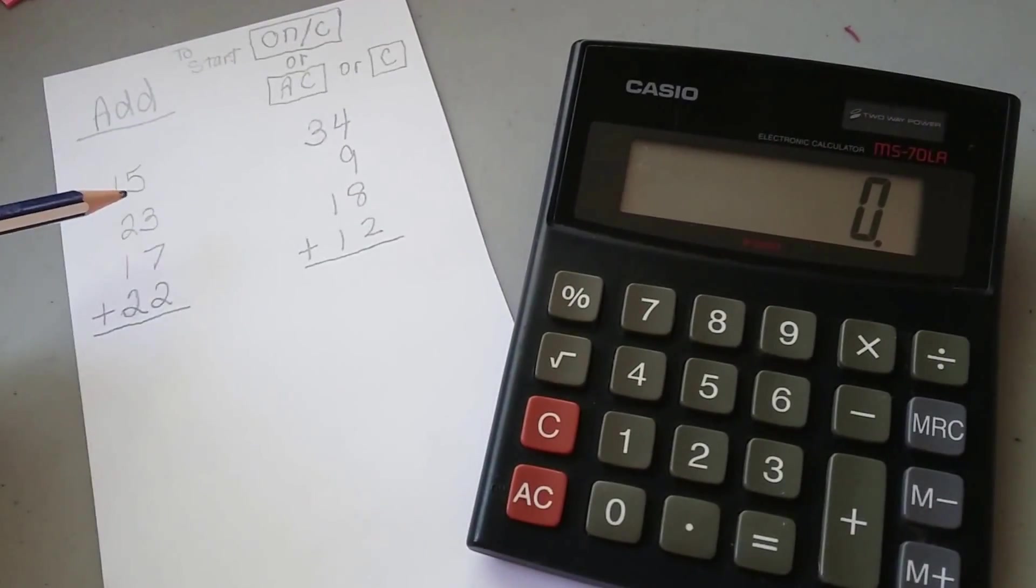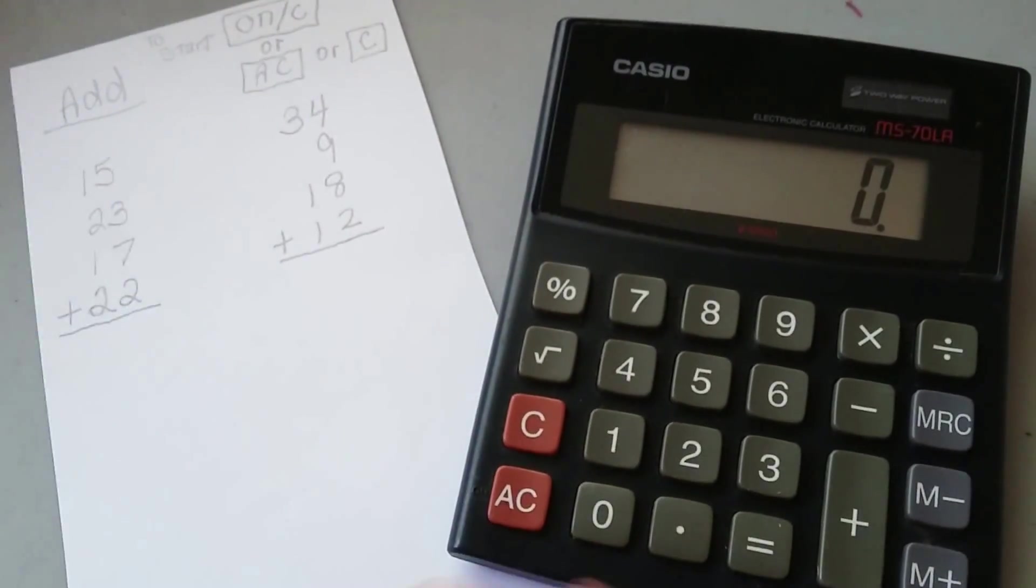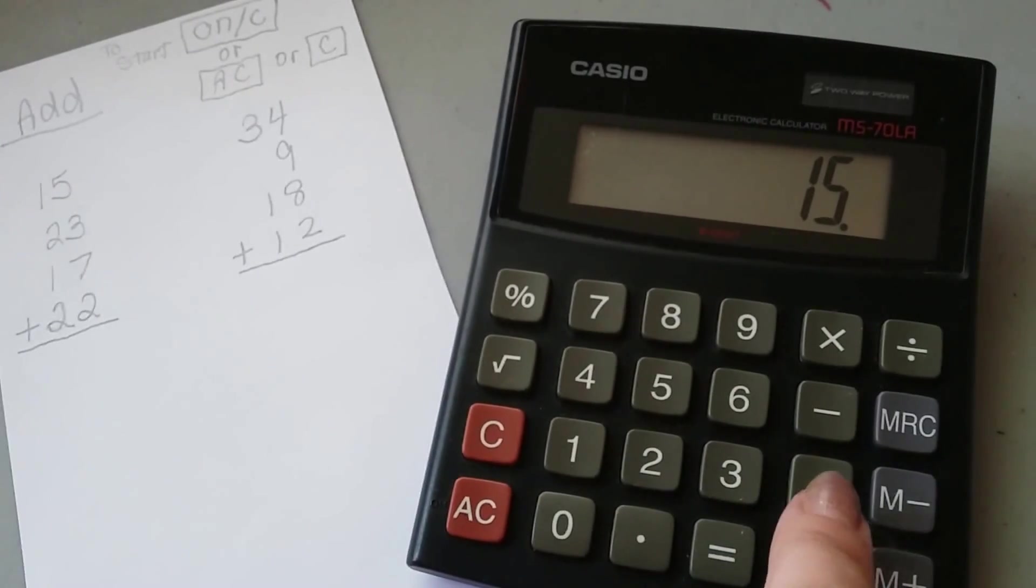We're going to add 15, 23, 17, and 22. So for the 15, I hit the 1, and then the 5, and then the plus.